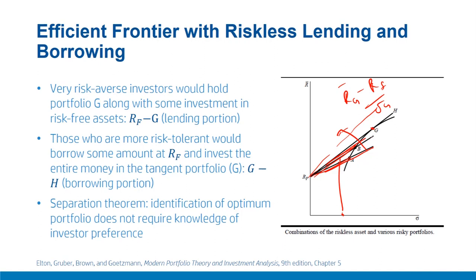Theoretically, all investors — whether less risk-preferring or more risk-preferring — should hold portfolio G. Those who are more risk-averse would invest some amount in the risk-free rate and some in portfolio G, standing on the lending segment RFG. Those investors who are more risk-preferring would lie on the borrowing segment to the right of G. They will borrow at the risk-free rate and invest not only their original wealth but this additional borrowed amount in portfolio G.